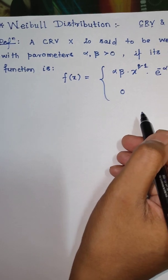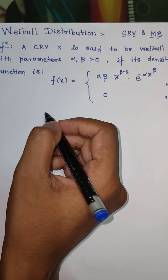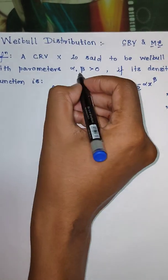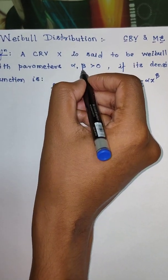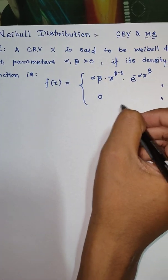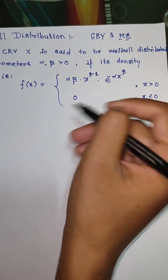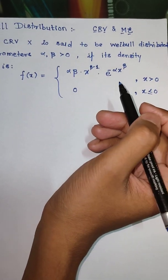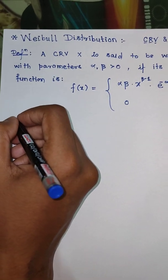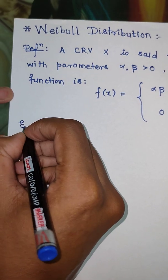Before we proceed to the example, let me make one remark about the parameters alpha and beta. If we put beta equal to 1 and keep alpha as it is, then the Weibull distribution converts to the exponential distribution — that is the second topic we are going to take up in these learning videos. So let us take an example to work out.